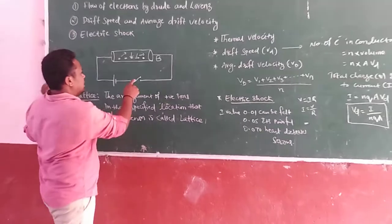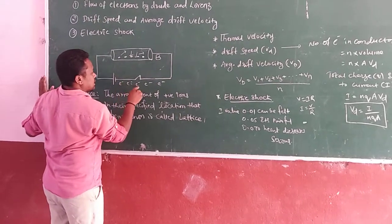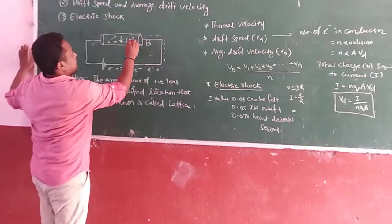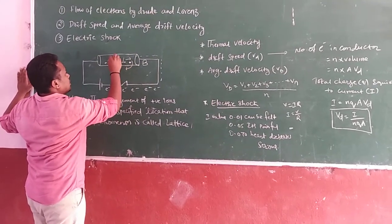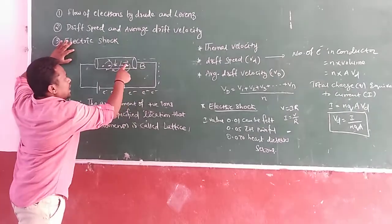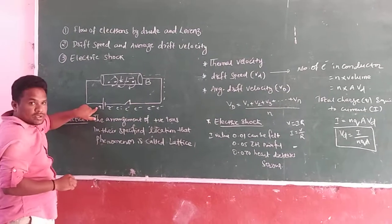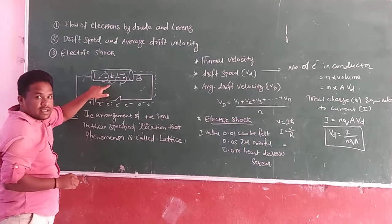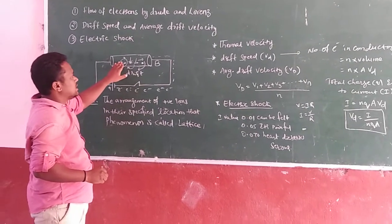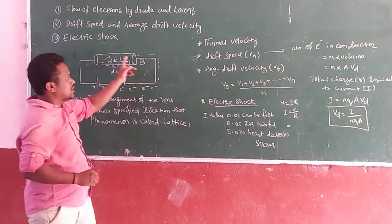After connecting to the battery — when the switch is closed — the flow of electrons occurs. The electrons move toward the positive terminal. Whenever the flow of electrons occurs, the negative electrons are deviated and rotate toward the positive terminal. Whenever the battery is connected and we switch on, all the electrons present inside the conductor are deviated toward the positive terminal. This bending or deviation is called drift. Before connecting to the battery, electrons have thermal velocity; after connecting to the battery, electrons get drift speed.